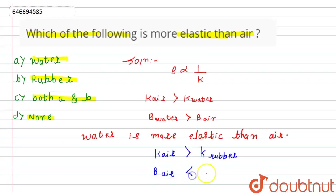Hence, we can state that rubber is also more elastic compared to air. Rubber will be more elastic as compared to air.